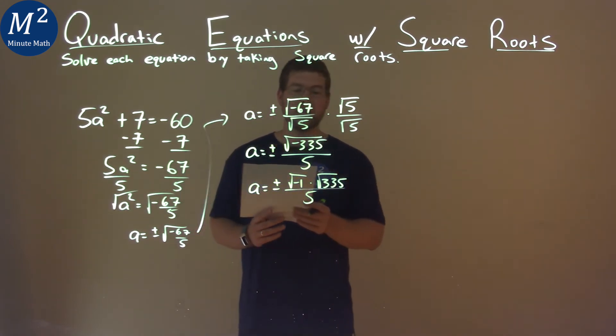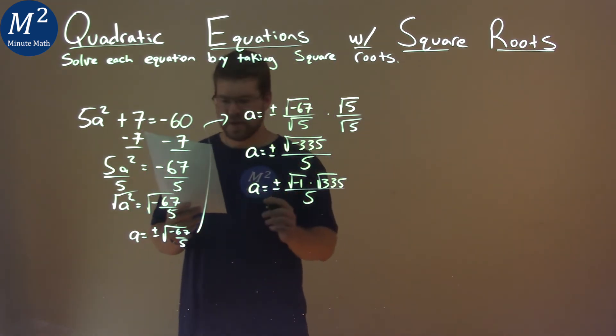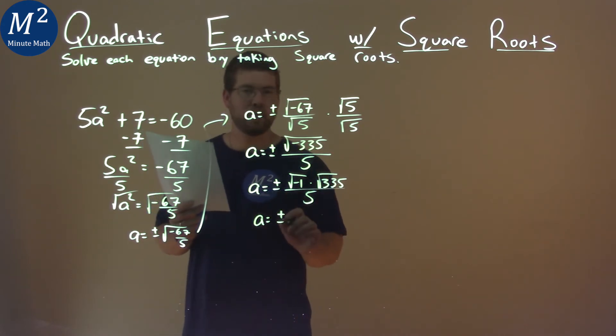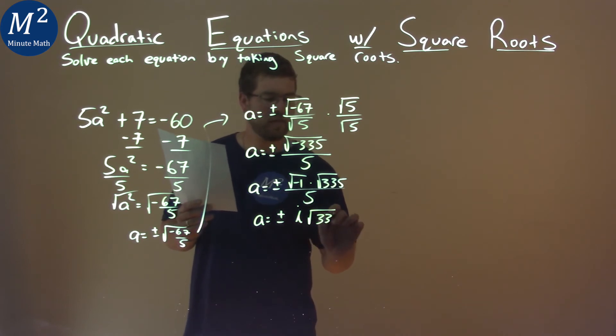And now what's the square root of negative 1? We know it as i, imaginary. So, a equals plus or minus the square root of negative 1 being i, times the square root of 335 over 5.